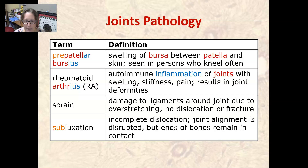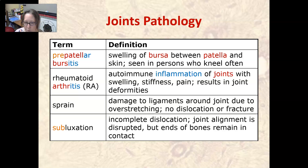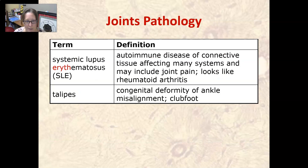A sprain is damage to ligaments around the joint due to overstretching. There is no dislocation or fracture with a sprain. A subluxation is an incomplete dislocation, so the joint alignment is disrupted but the ends of bones remain in contact. Systemic lupus erythematosus is an autoimmune disease of the connective tissue that affects many systems and may include joint pain. It looks somewhat like rheumatoid arthritis — both are autoimmune, so there are some similarities.